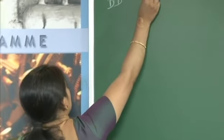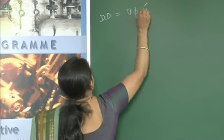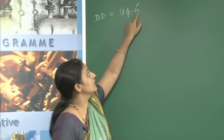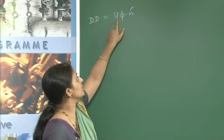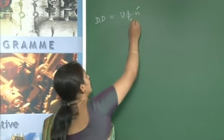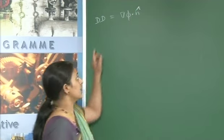In the previous class we learned the meaning of directional derivative. The directional derivative is given by grad φ dot n̂. Remember this formula: grad φ dot n̂, where n̂ is the unit vector in the given direction.